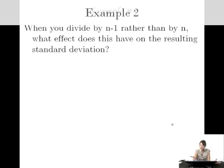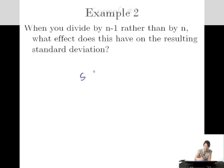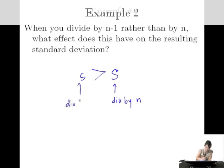Here's a conceptual question: when you divide by n minus 1 rather than by n, what effect does this have on the resulting standard deviation? Well, n minus 1 is a smaller number than n, and dividing by a smaller number results in a bigger answer. So the resulting standard deviation s will be a little bit greater. That's it for variability. Thanks for using Educator.com.